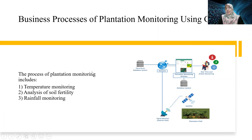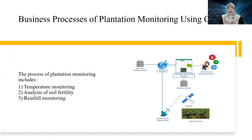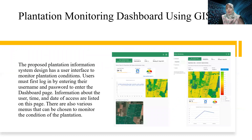This is the business process for plantation monitoring using a geographic information system. The process of plantation monitoring includes temperature monitoring, analysis of soil fertility, and rainfall monitoring. The proposed plantation information system design has a user interface to monitor plantation condition.